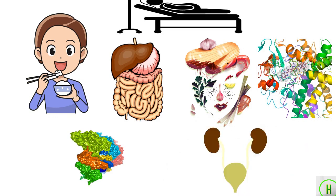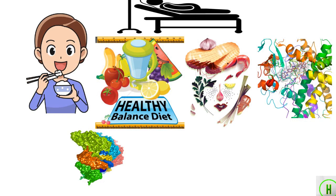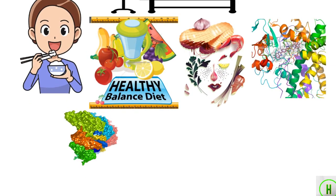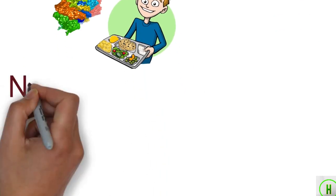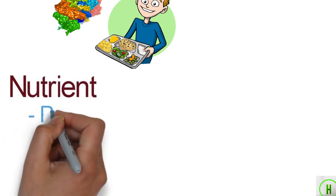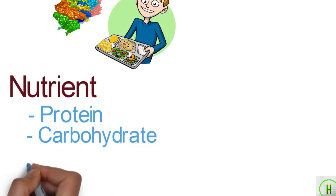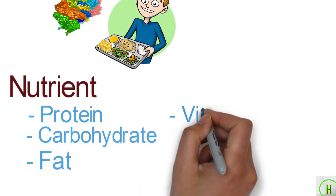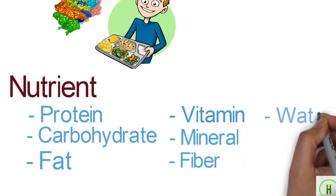Nutrition is about eating a healthy and balanced diet. Food and drink provide the energy and nutrients you need to be healthy. A nutrient is a source of nourishment, a component of food — for instance, protein, carbohydrate, fat, vitamin, mineral, fiber, and water.